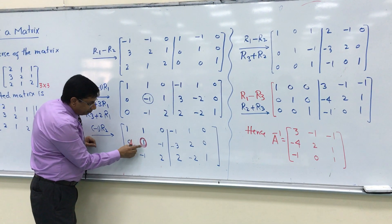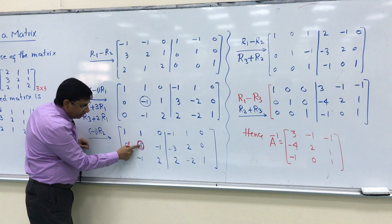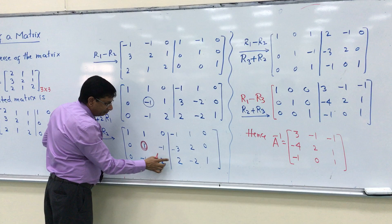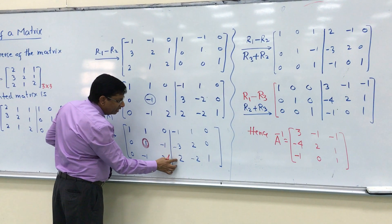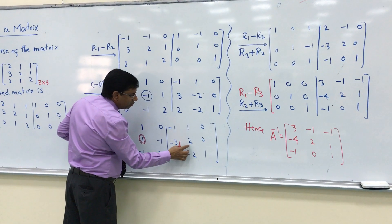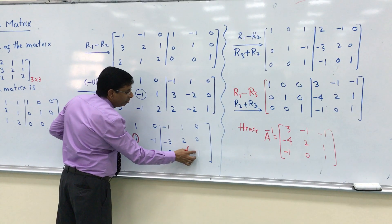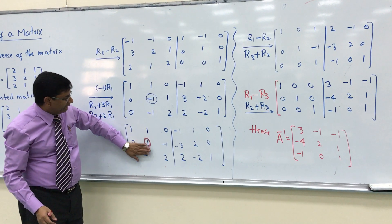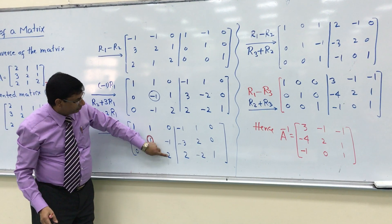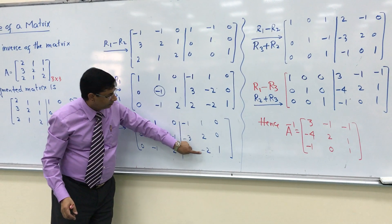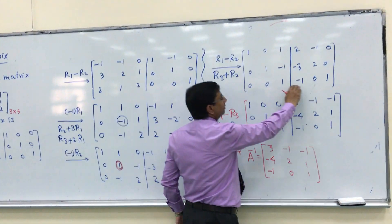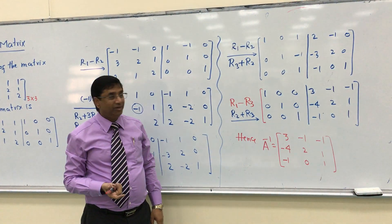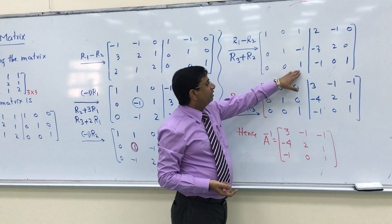Now adding R2 to R3: negative 1 plus 1 gives 0; 2 minus 1 gives 1; 2 minus 3 gives negative 1; negative 2 plus 2 gives 0; 1 plus 0 gives 1. I am adding the second row numbers into the third row. We got one more 1, with two 0s — and above and below that 1 we have 0s.